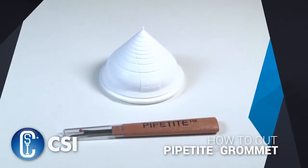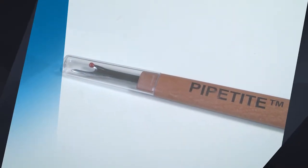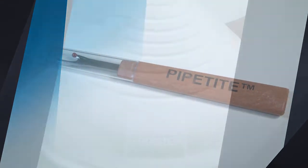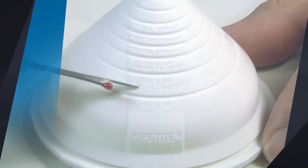The first step should be to locate all your needed tools for Pipetite grommet. That will be the Pipetite cutting tool included with Pipetite purchases. The next step will be to locate the cut line for the size of pipe that you will be installing Pipetite on.